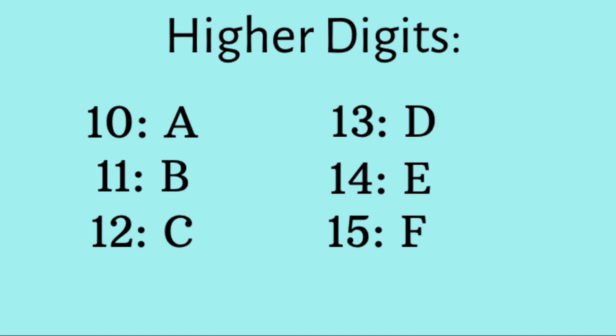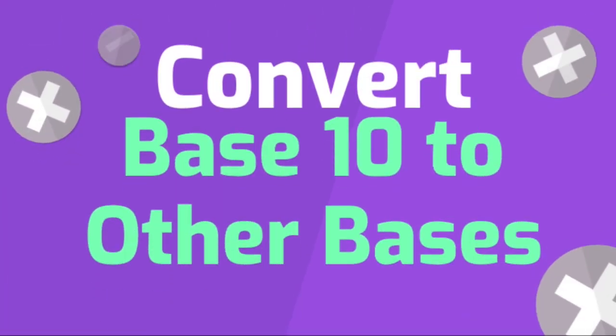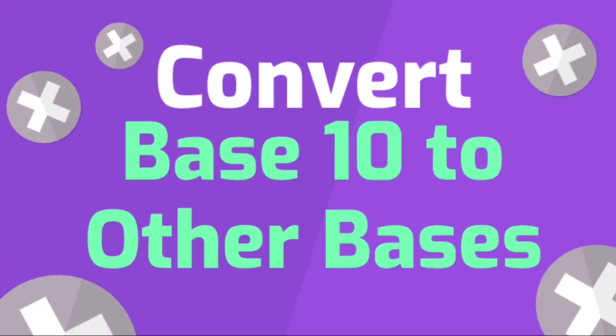Now we'll learn the opposite, how to convert base 10 to other bases. Convert 143 to base 7. We start off by finding the remainder when our number is divided by the base. The remainder in our case is 3, so we subtract that from our original number to get 140. We then add this remainder to the very end of our final answer.